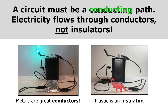A circuit must be both a closed path and a conducting path. Electricity flows through conductors, not insulators. On the left, you can see that the gap between these two wires was closed with a piece of aluminum foil. Aluminum is a great conductor because metals are great conductors, so the circuit is working and the light bulb is on. But on the right, the gap has been filled with a plastic dinosaur, and plastic is an insulator. So even though you might say this is a closed path, it's not a closed conducting path, and this circuit is not working.